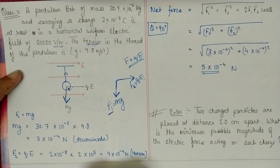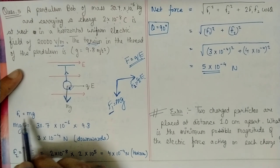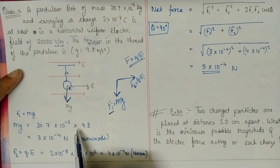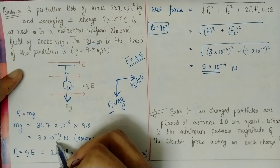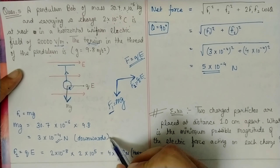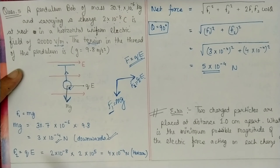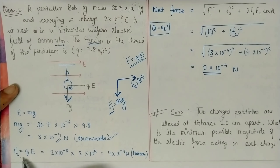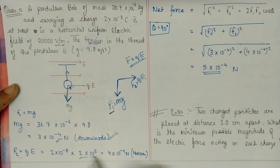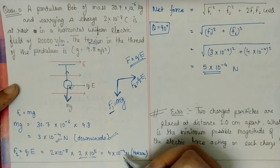Calculating F₁: mg = 30.7 × 10⁻⁶ × 9.8 = 3.3 × 10⁻⁴ N (downward). Calculating F₂: QE = 2 × 10⁻⁸ × 20,000 = 2 × 10⁻⁸ × 2 × 10⁴ = 4 × 10⁻⁴ N (horizontal).